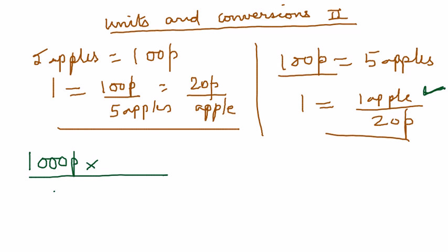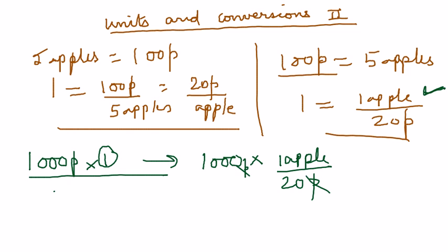So I'm going to just simply multiply this by 1 because 1,000p times 1 is 1,000p. And for this one, I can now substitute 1,000 multiplied by 1 apple divided by 20p. I've got 1,000p, 20p here. The p's cancel out and zeros cancel out and what I get is 50 apples.